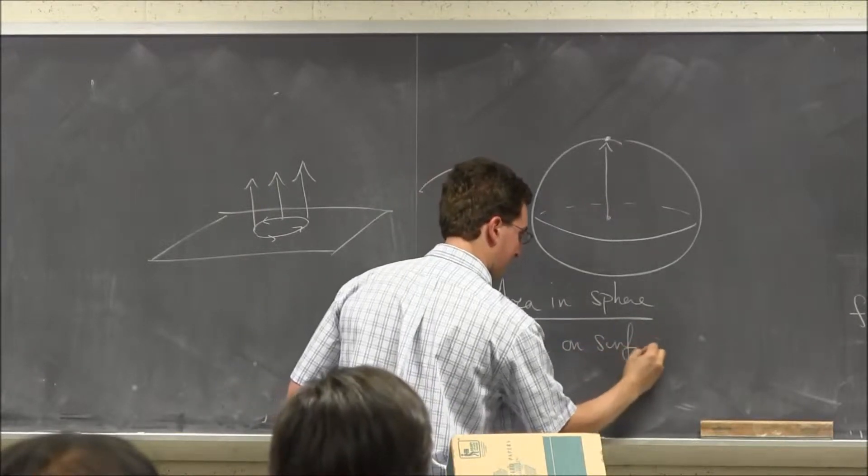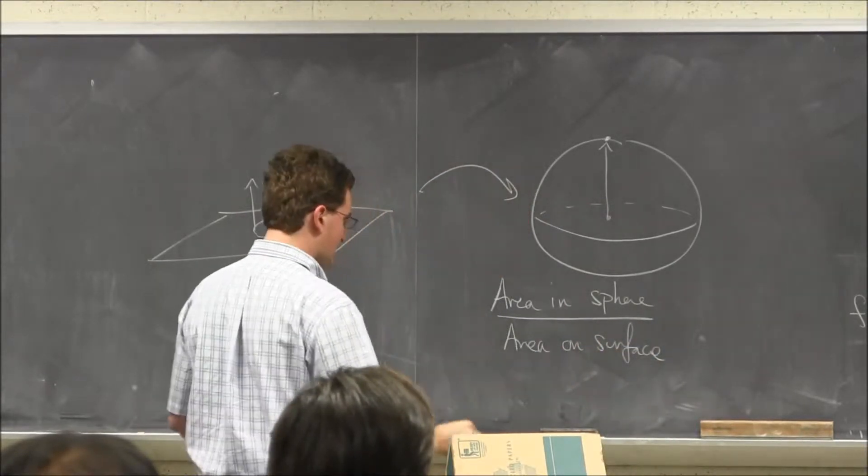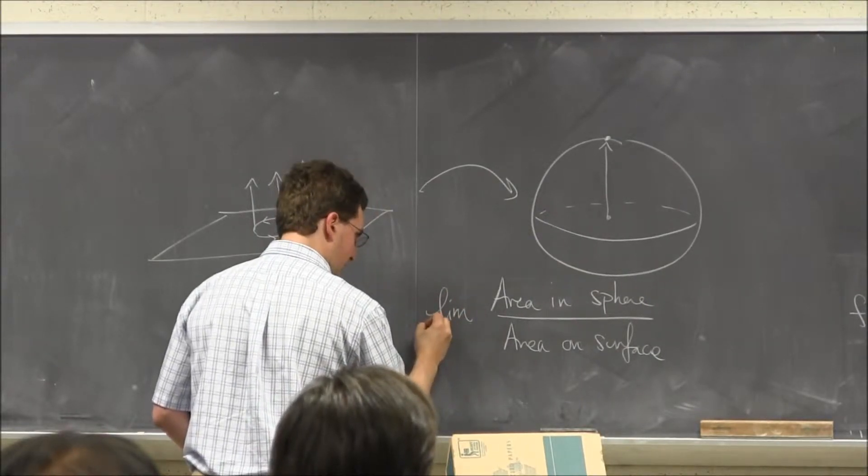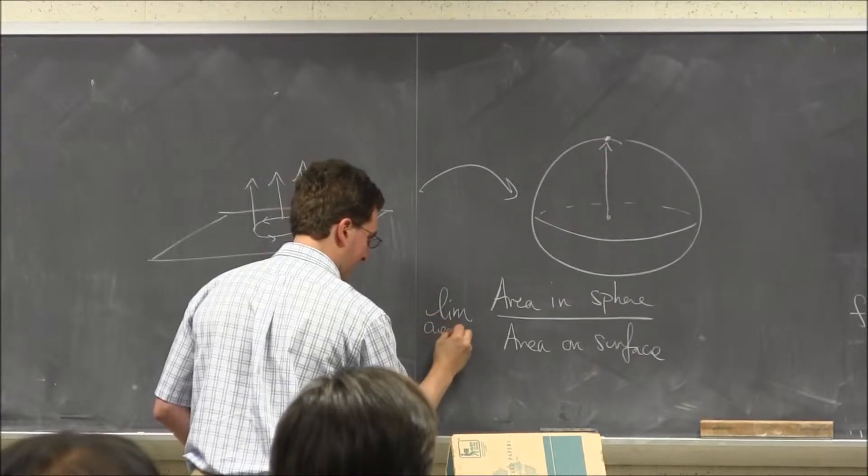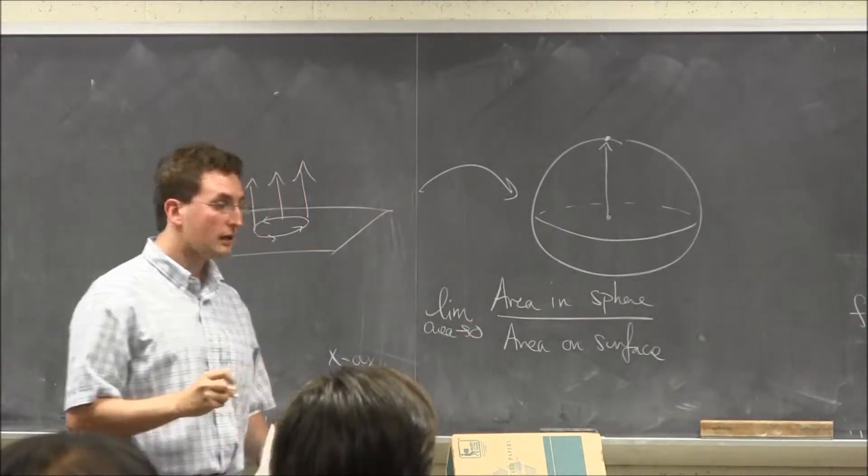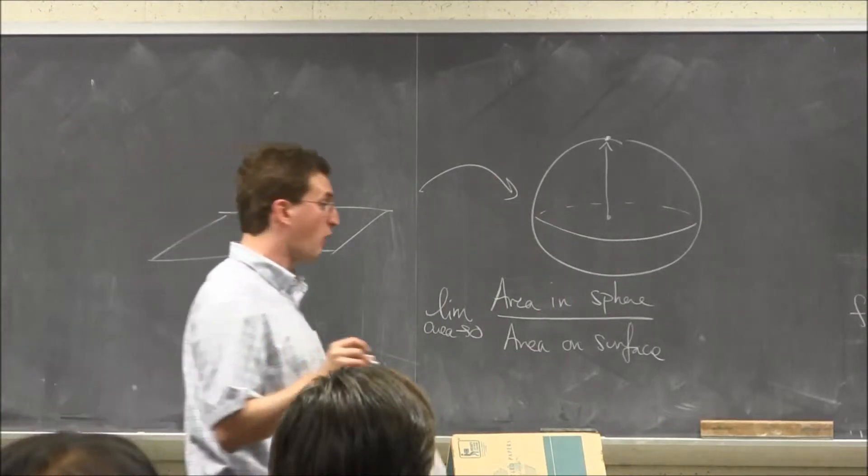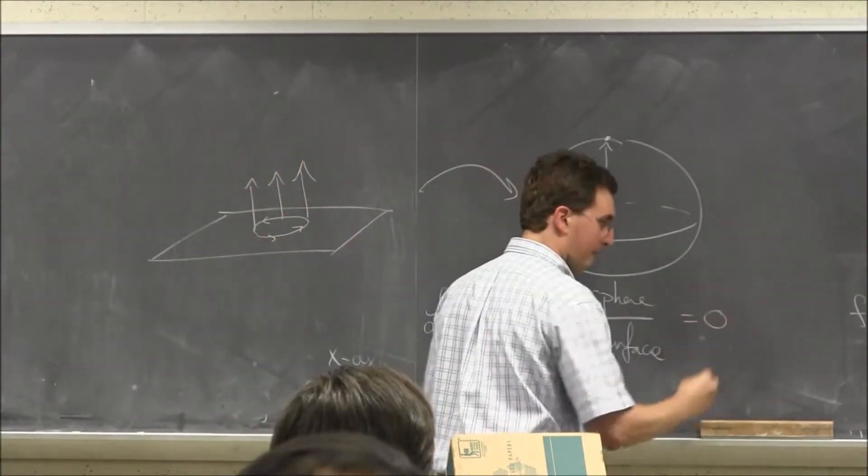So if I do area in the sphere over the area on the surface, and I'm going to say, as a limit, I'm going to actually take a limit, I want the area to go to zero. If I do this for a flat piece of paper, I'm going to get zero as my answer all the time.